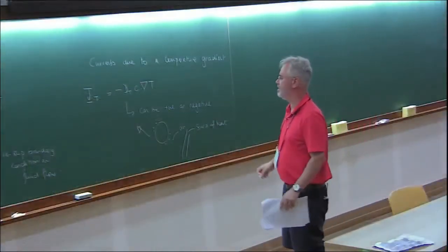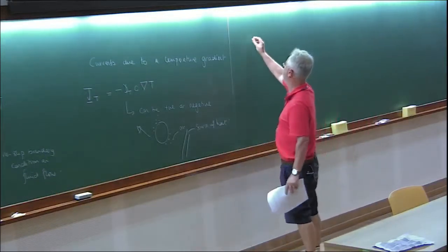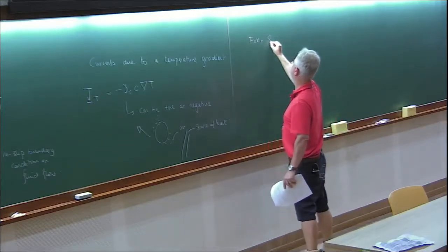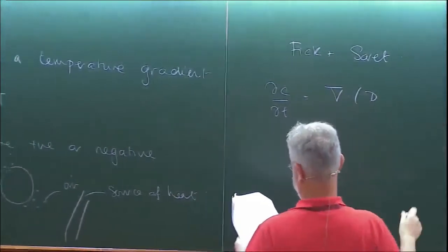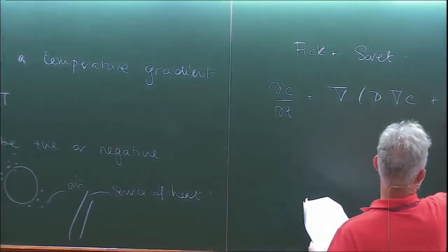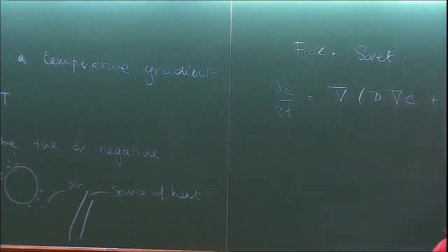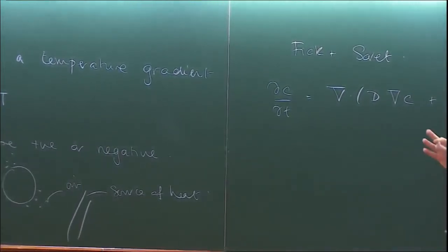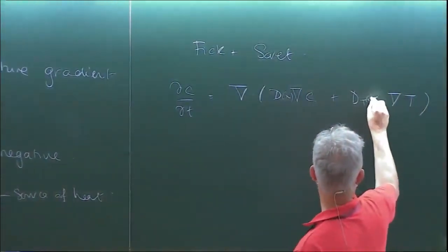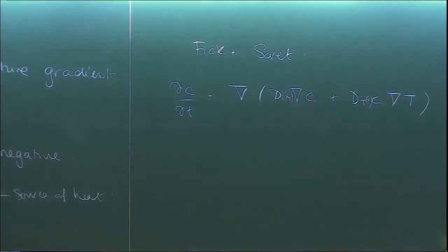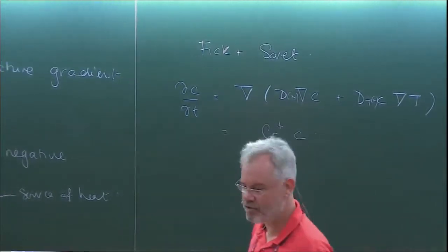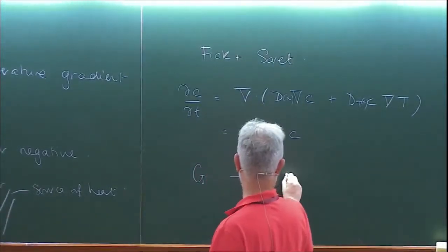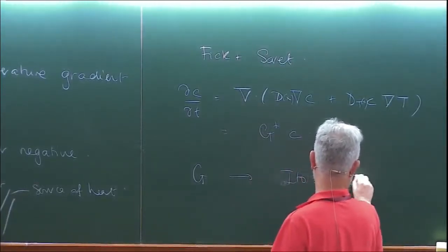You can combine Fick's law and the Soret effect to get an equation dc/dt = D del-squared(c) + D_T div(c grad T). For a complex system, rather than solving the partial differential equation, you can define g-dagger, calculate g, write down the Ito SDE, and simulate it via Monte Carlo.